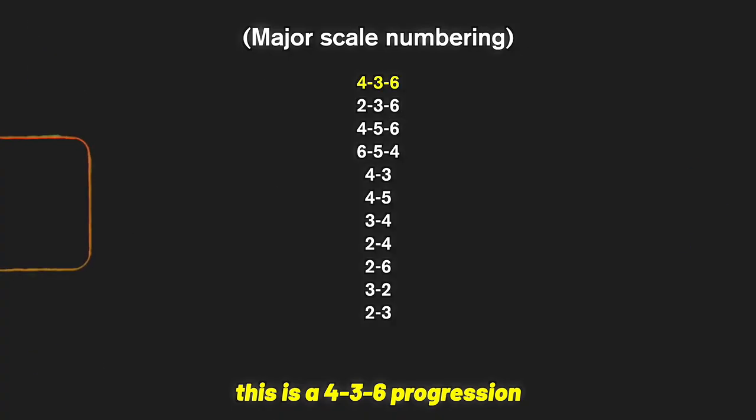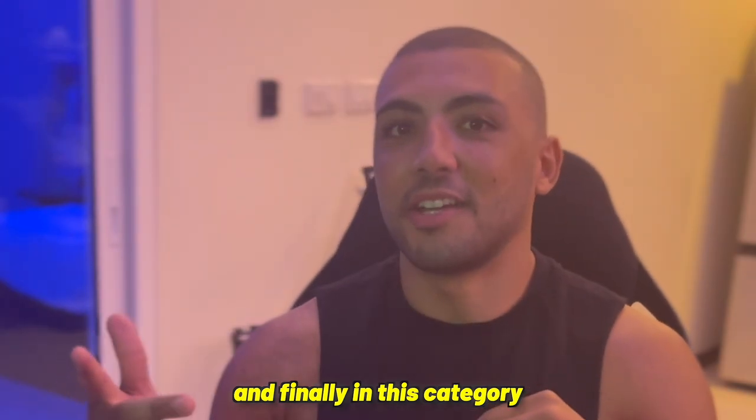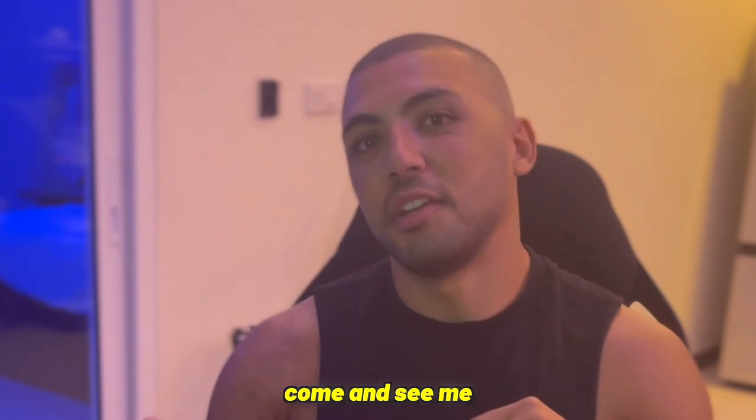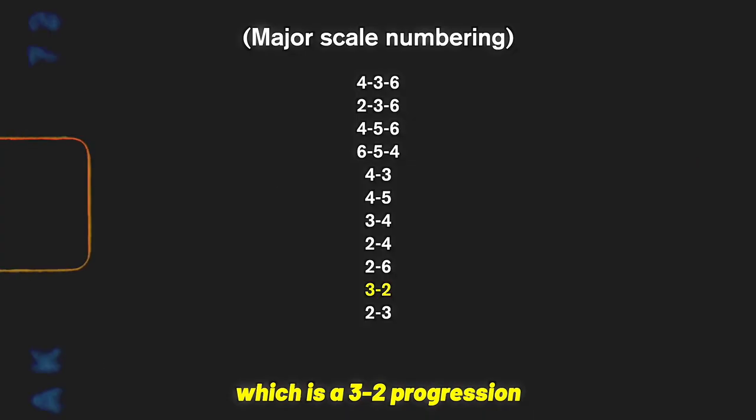Now let's look at the MIDI for Do Not Disturb. This is a 4, 3, 6 progression. And finally in this category, Come and See Me, which is a 3, 2 progression.